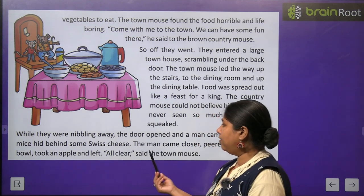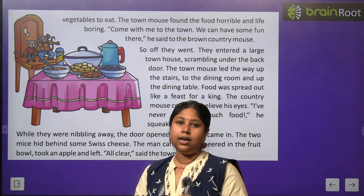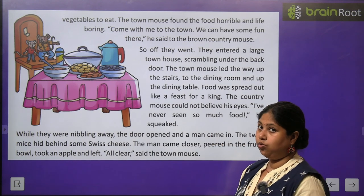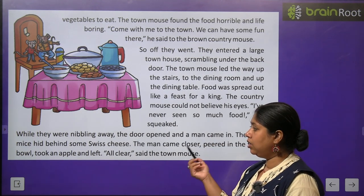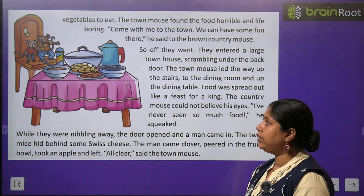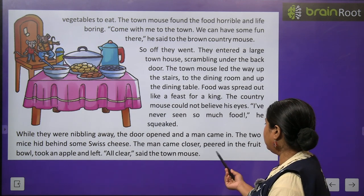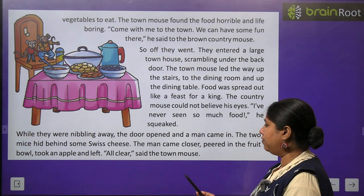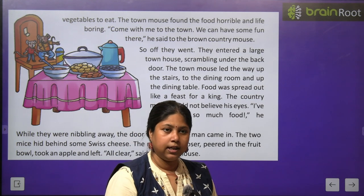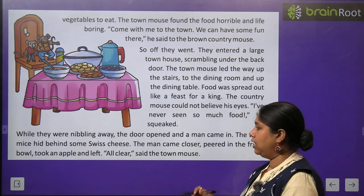While they were nibbling away, the door opened and a man came in. Dono chuhe chhote chhote tukdon mein khana khane lage — jisko hum nibble bolte hain. Itne mein wahan ek aadmi aa gaya, usne darwaza khola aur andar aaya. The two mice hid behind some Swiss cheese. The man came closer, peered in the fruit bowl, took an apple and left. Woh aadmi dining table ke aur nazdik aaya, usne achche se dekha, phir fruit basket se ek apple utha ke wahan se chala gaya.